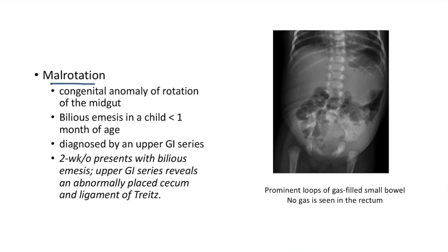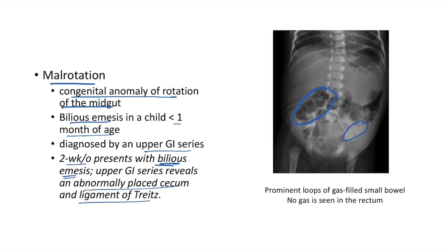Malrotation: congenital anomaly of rotation of the midgut. Presents as bilious emesis in a child less than 1 month of age. Diagnosed by upper GI series (barium study). Abdominal X-ray shows prominent loops of gas-filled small bowel but no gas in rectum. Case: 2-week-old with bilious emesis; upper GI series reveals abnormally placed cecum and ligament of Treitz.